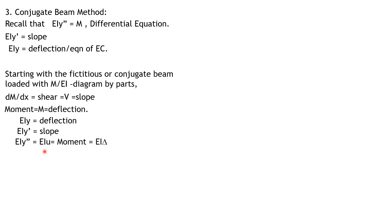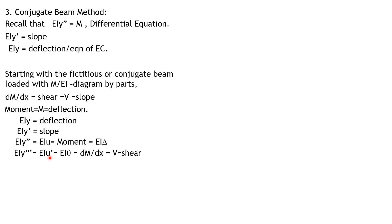Differentiating, EI y-prime is the derivative of moment, and since the derivative of moment equals shear, and u-prime is interpreted as slope, EI u-prime — or EI theta — corresponds to shear. In short, the slope on the real beam corresponds to the shear of the conjugate beam at the same point. And the moment at a point on the fictitious beam corresponds to the deflection of the real beam.